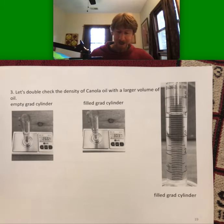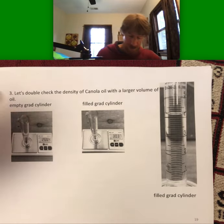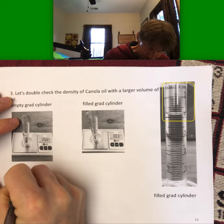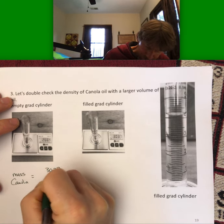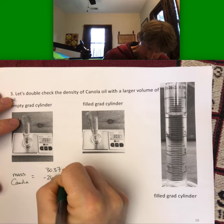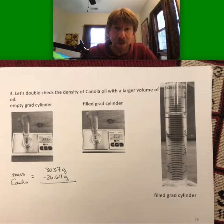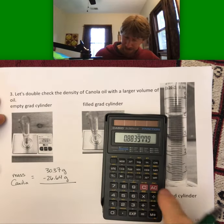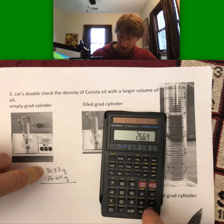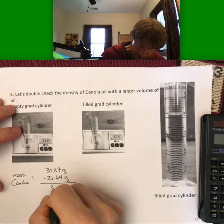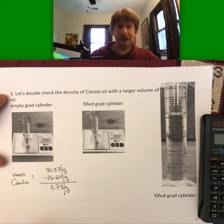Let's do it again. Same graduated cylinder, but I added more canola oil to it. Now I've got my calculation for subtraction. 30.37 minus 26.64 equals 3.73, three sig figs - everything's looking good there.